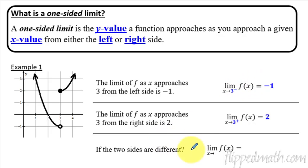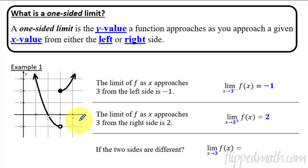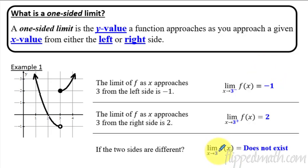Now, if the two sides are different — if you have the left side approaching one y value and the right side approaching a different y value, and they don't come together at the same y value — that means the limit as x approaches 3 does not exist. When there's no little plus or minus, that means we consider both sides of 3. Since they don't come together at the same y value, the limit does not exist.